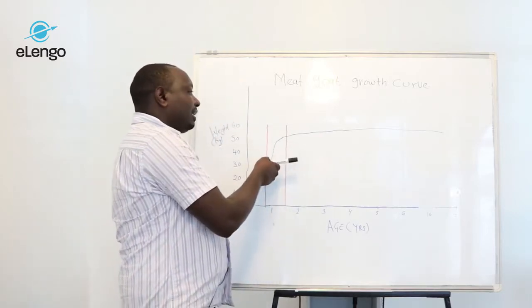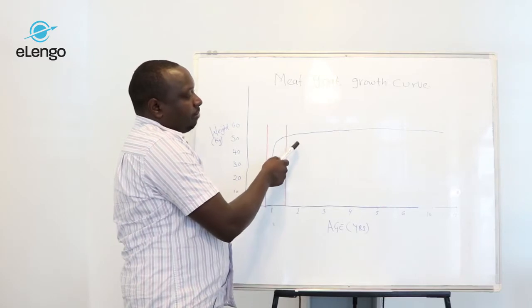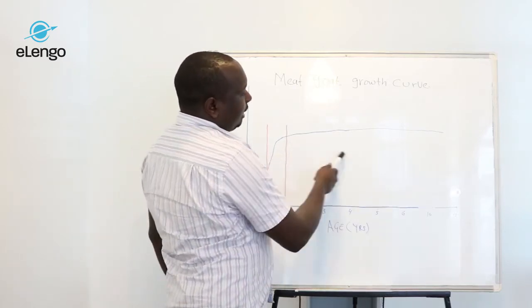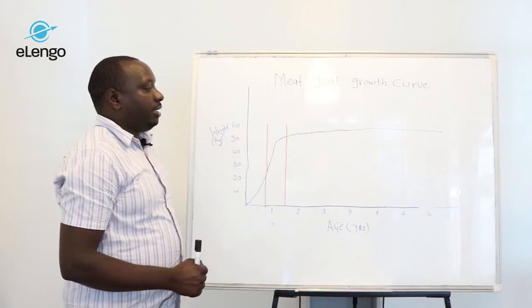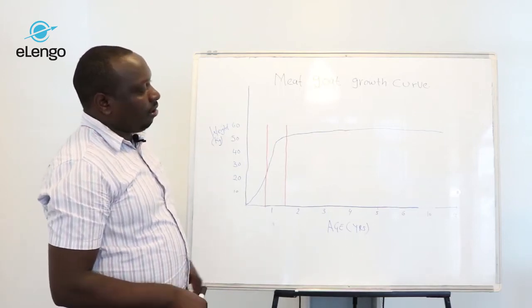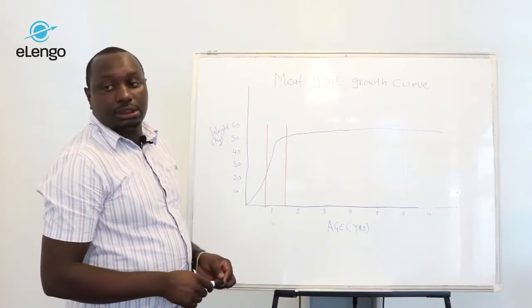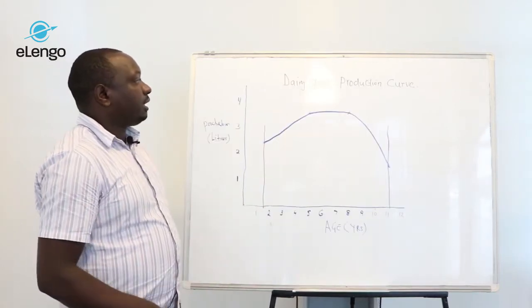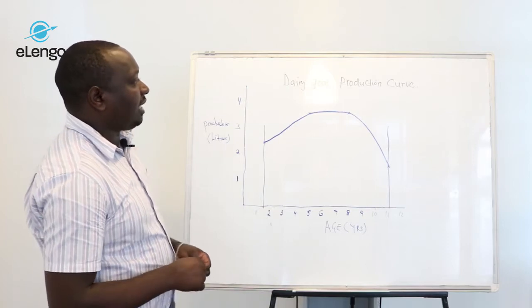After one and a half years, the goat starts increasing little weight but incurring a lot of cost. The meat becomes tougher, hence the farmer losing in terms of meat quality for the goat. Let's look at the dairy goat milk production curve.